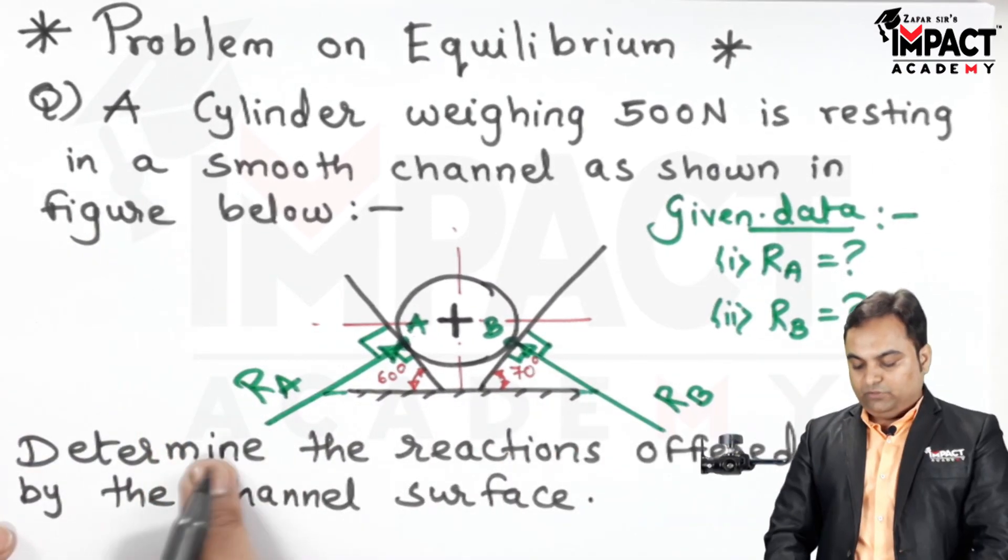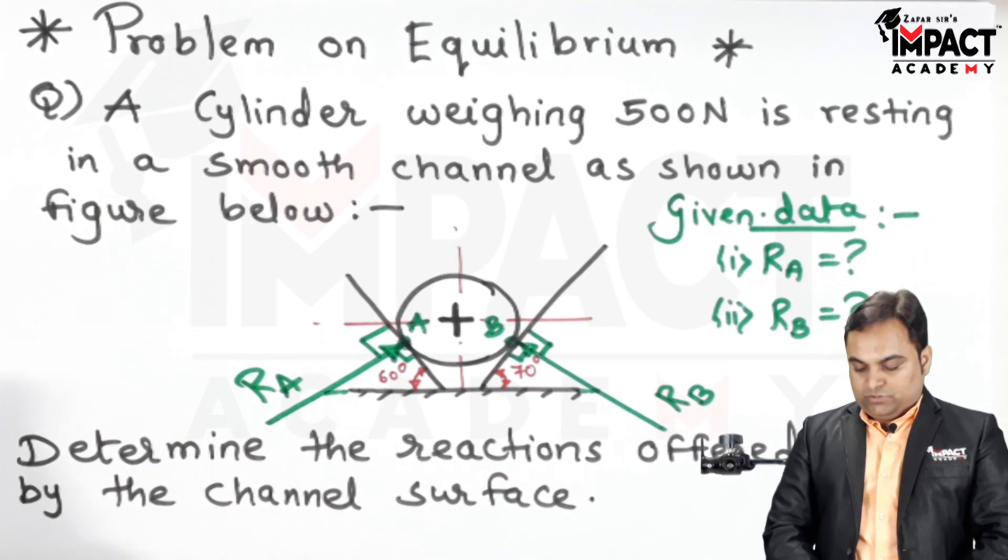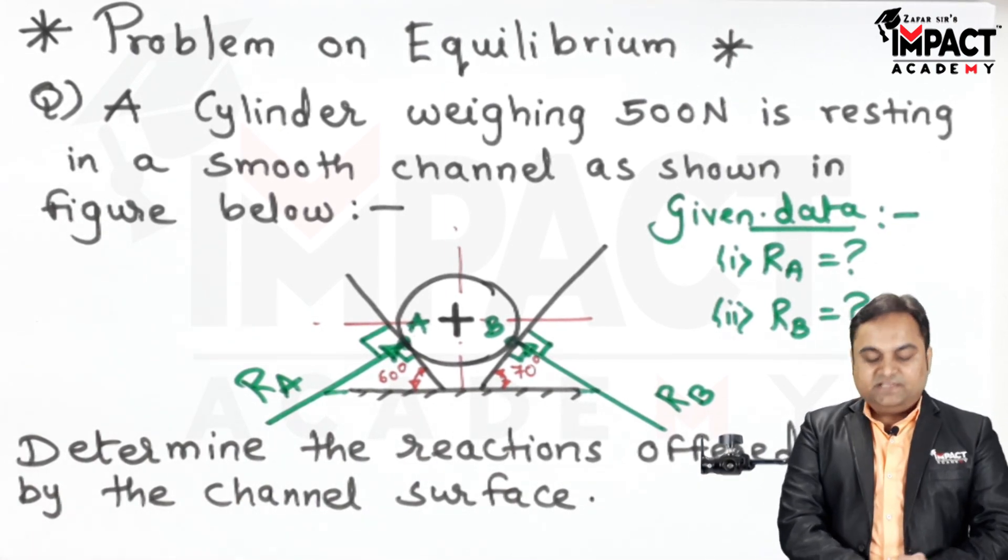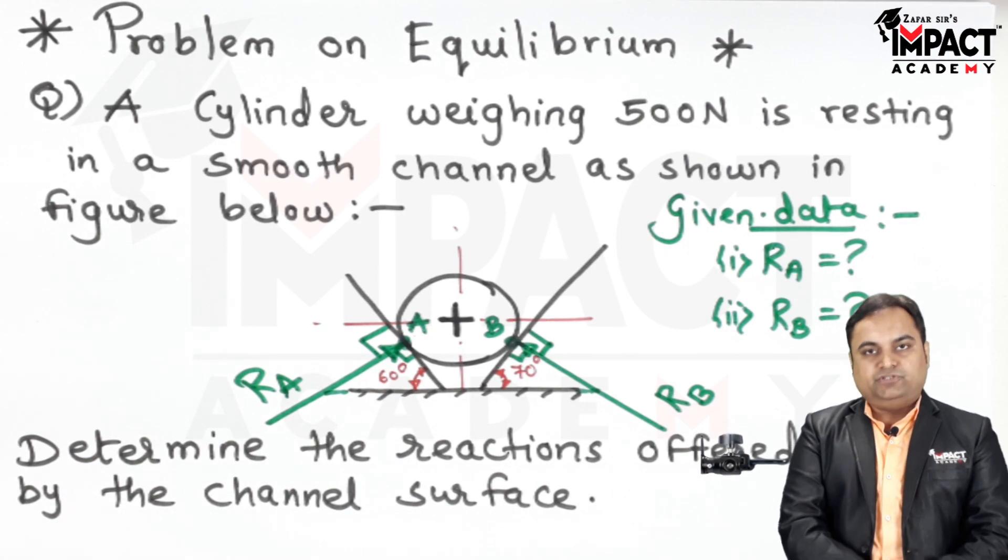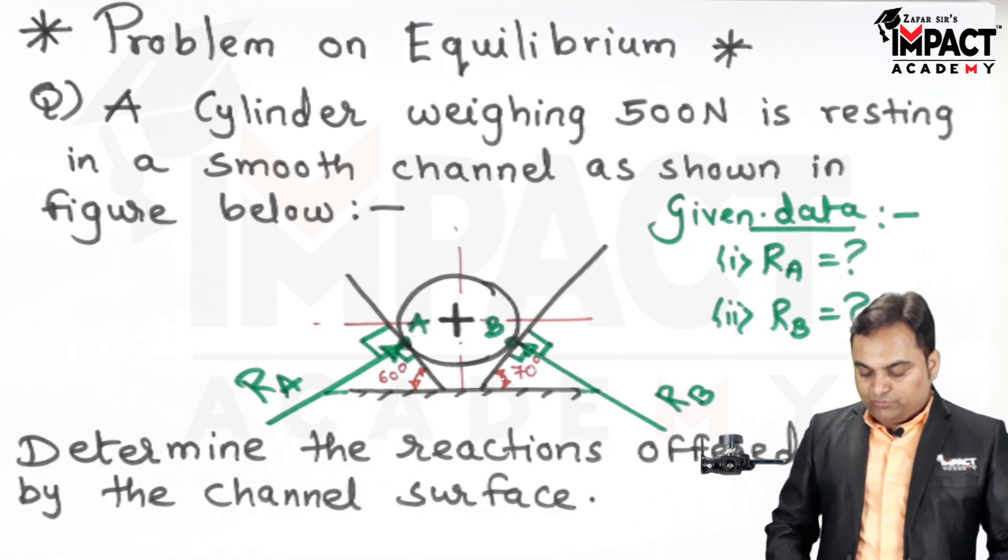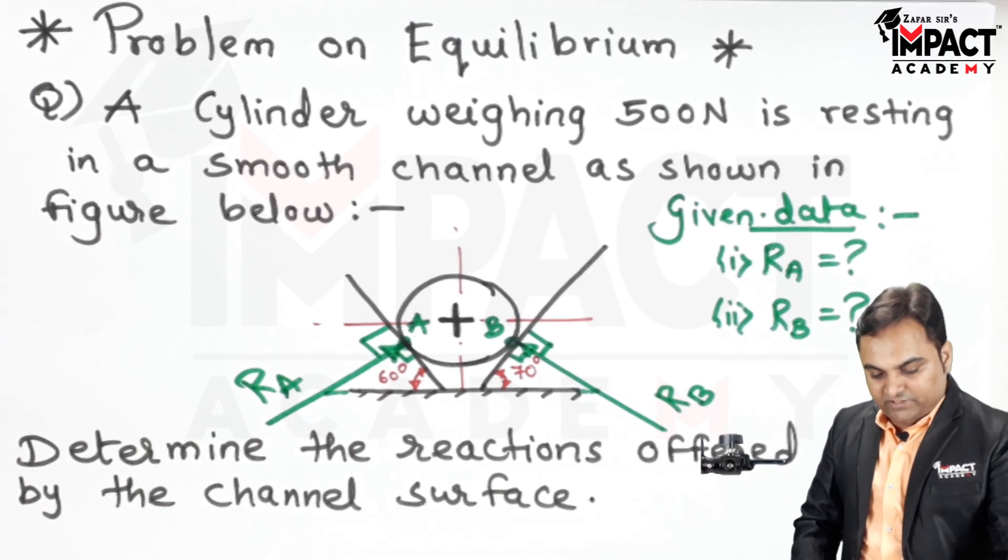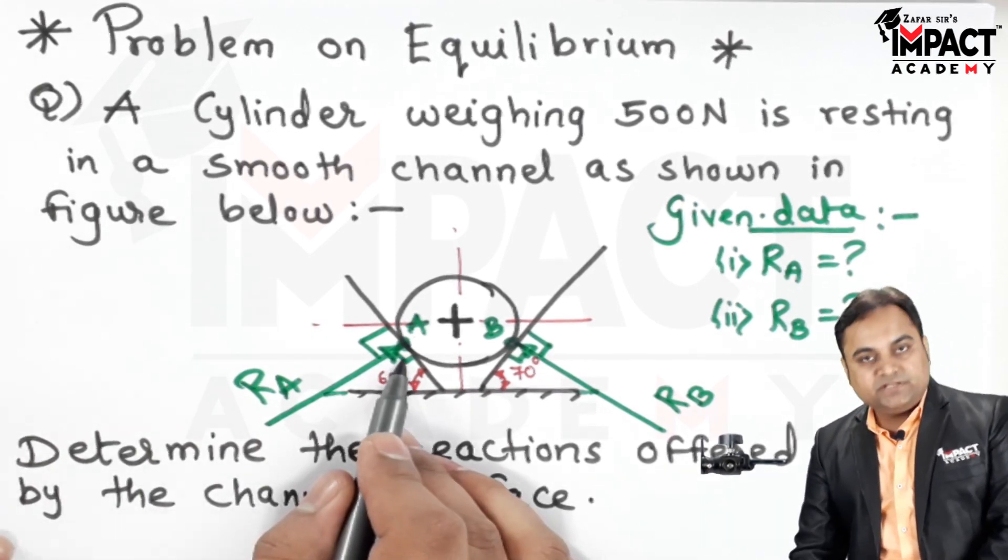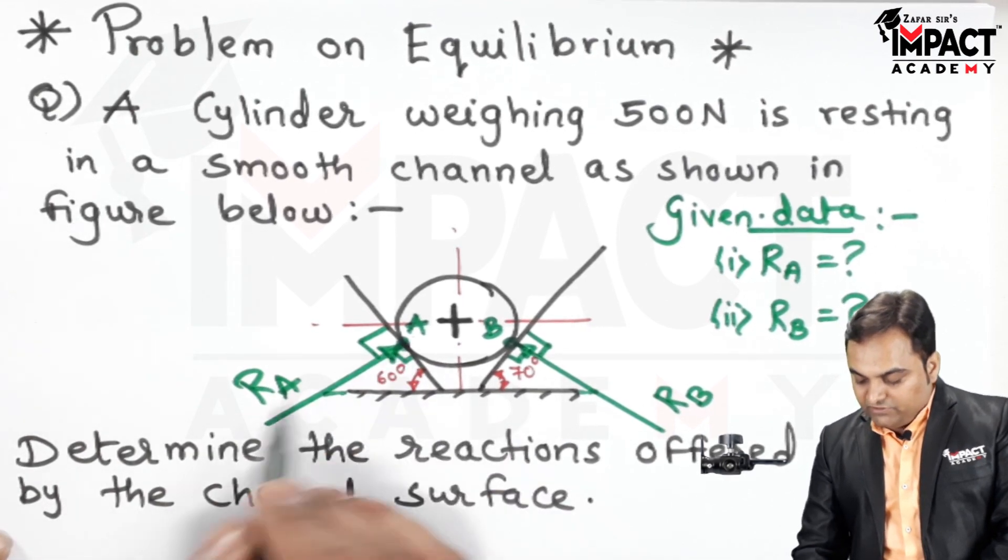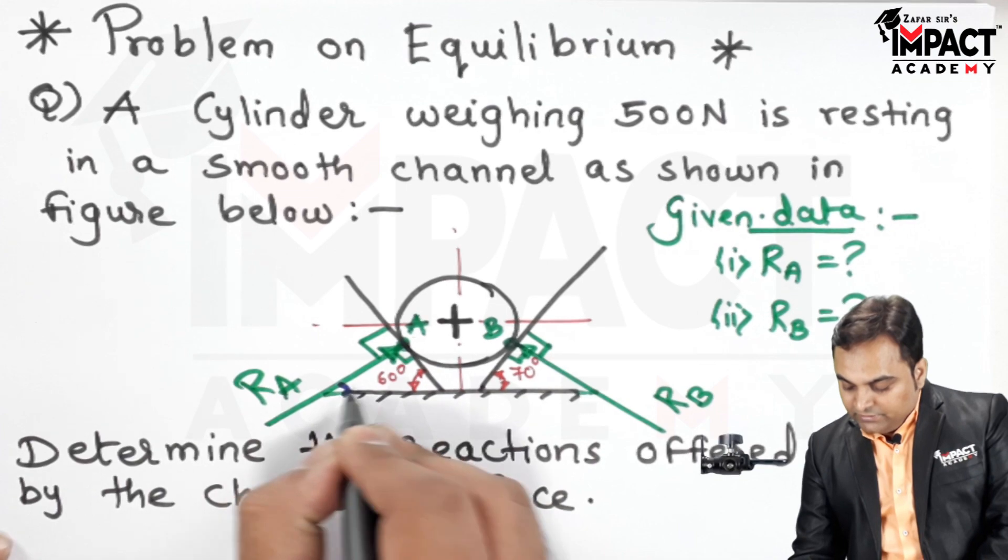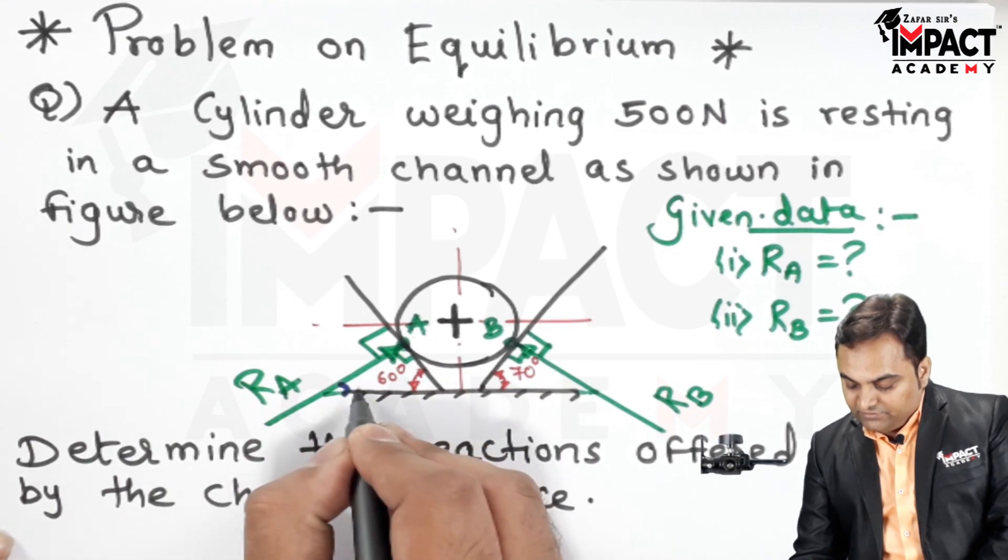So we have to find out RA and RB values. And for this we can easily solve it by using Lami's theorem because there are three forces. Since here there is 90 degree angle, this is 60 degree angle, so the angle made by RA with respect to the horizontal is 90 minus 60, that is 30 degree.